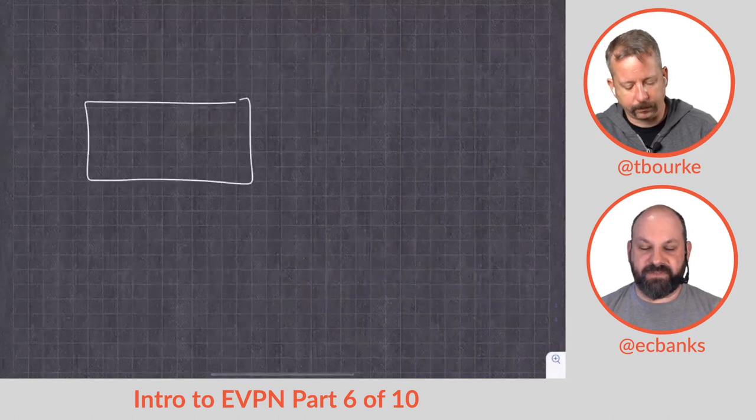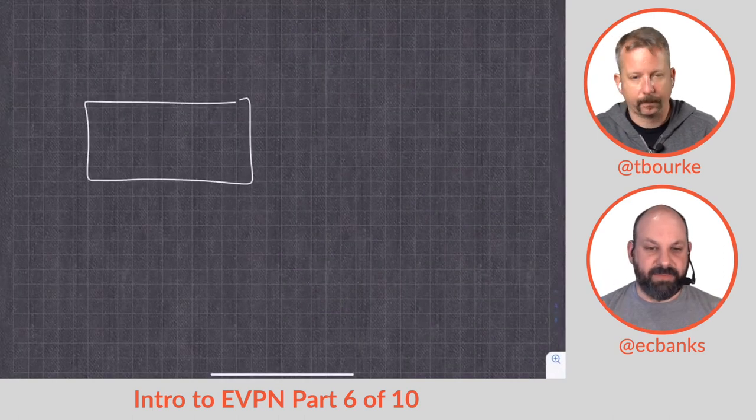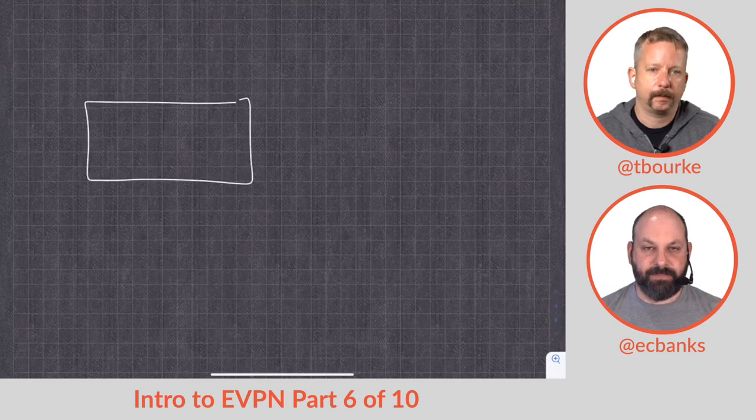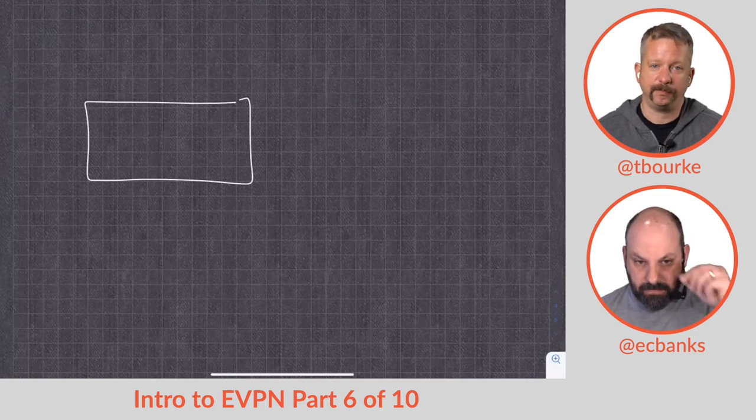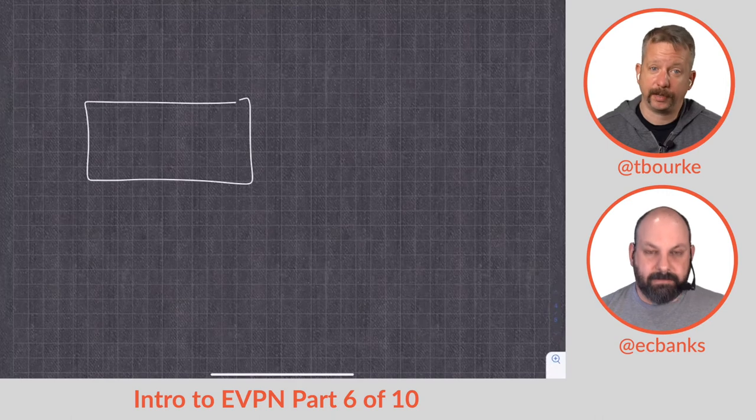I just want to clarify if spanning tree is part of this EVPN fabric or if it's just a process sitting there running in the background in case you do something foolish. Yeah, a process is sitting there in the background in case you do anything foolish. Spanning tree in a properly designed EVPN network should never do anything, but it's there in case you mess up.